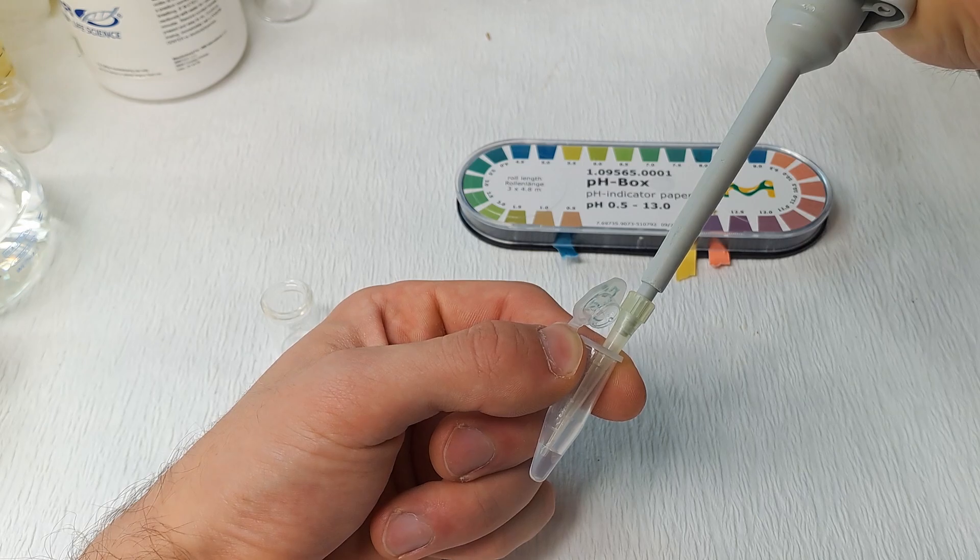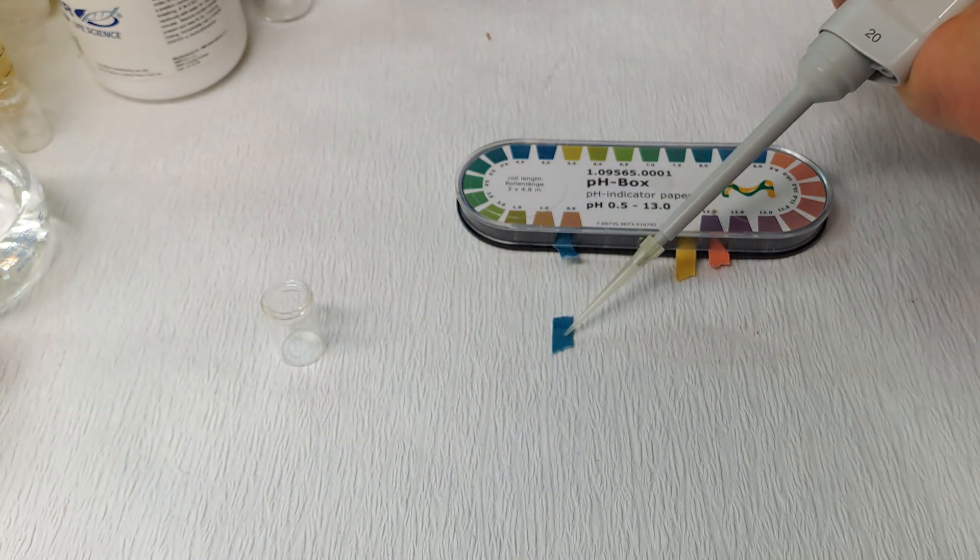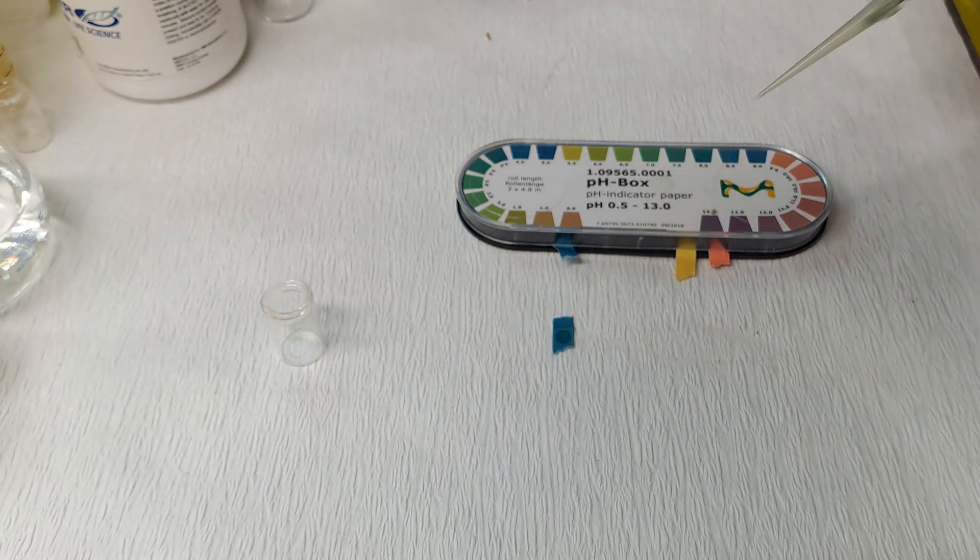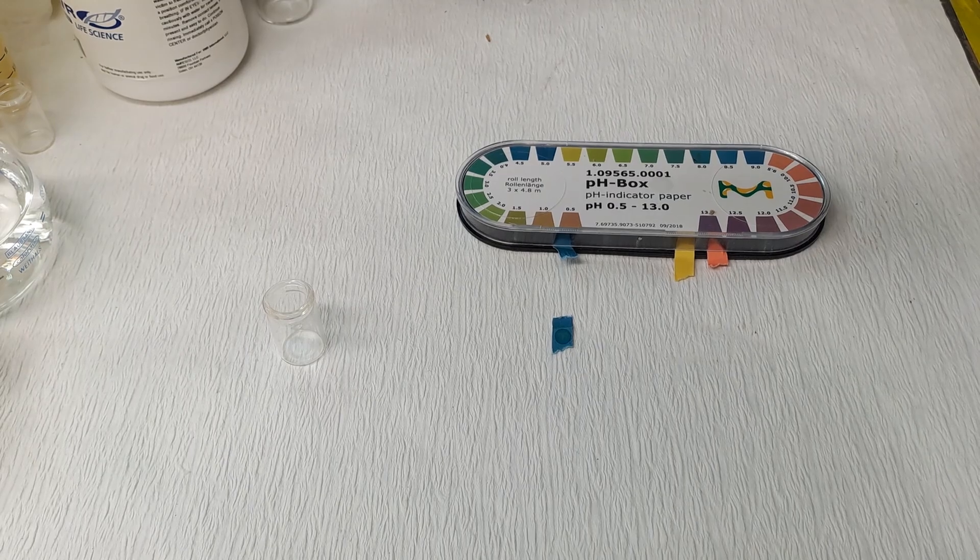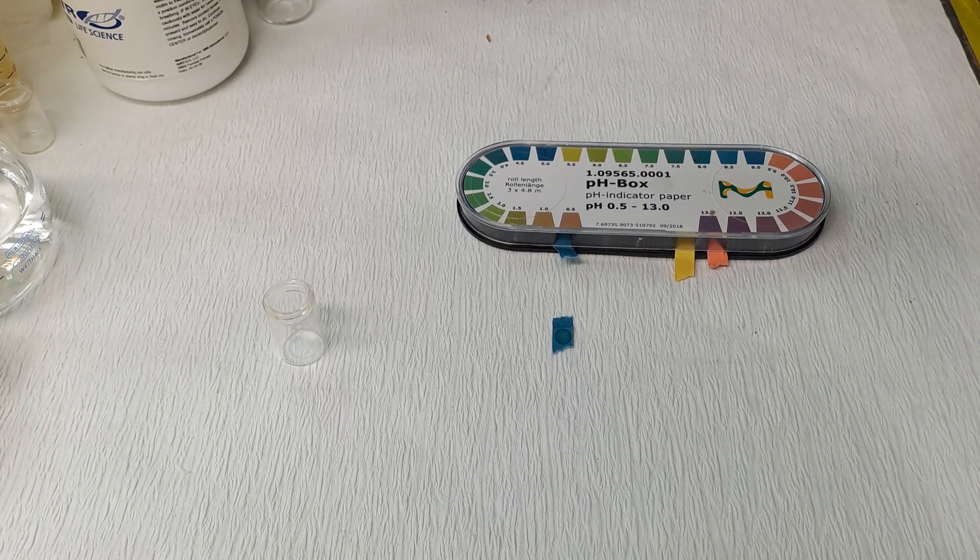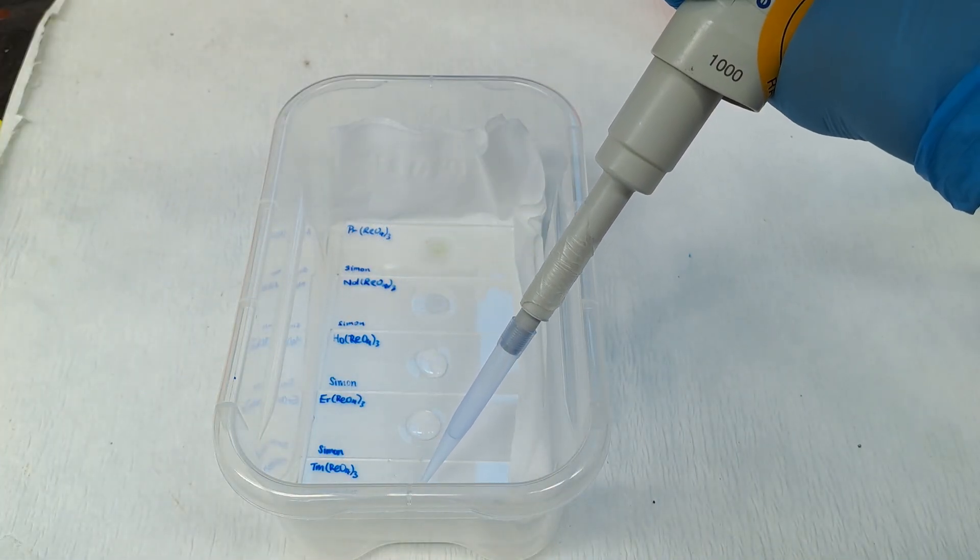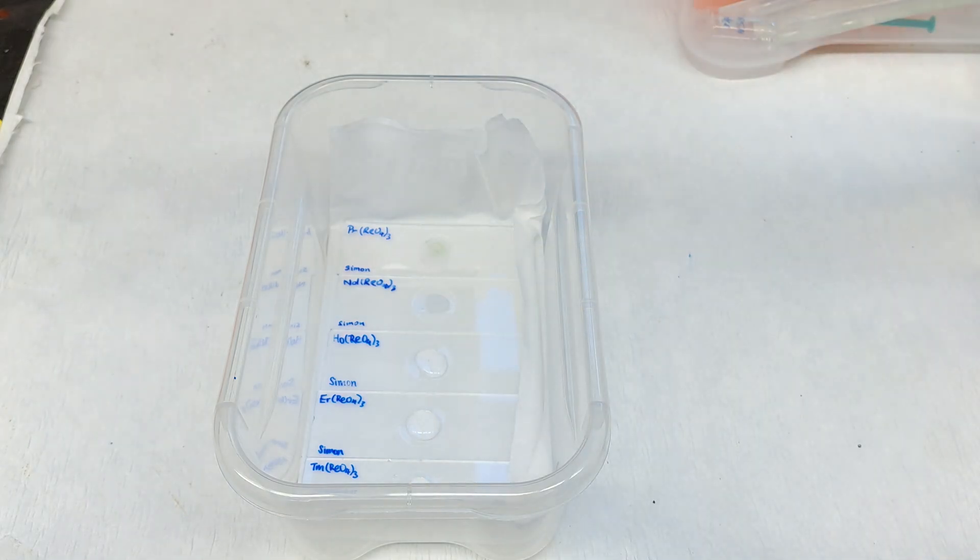We can test if the reaction is complete. Since I took an excess of the oxide and all the acid should have been reacted, that means there is no acid. And how do we measure the absence of acid? Also with pH paper. It should indicate a neutral to alkaline pH.